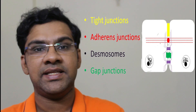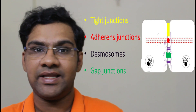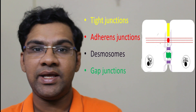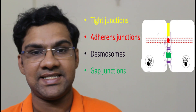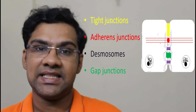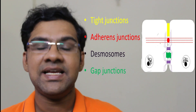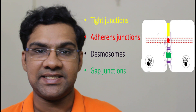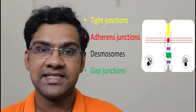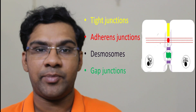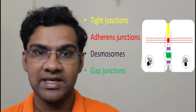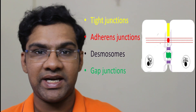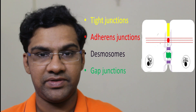The second type is tight junctions. These are junctions present between the plasma membranes; they are thick and don't allow any type of diffusion between two adjacent cells. The third one is adherent junctions — these are protein-type junctions that majorly play a role in maintaining adhesion between the cells.